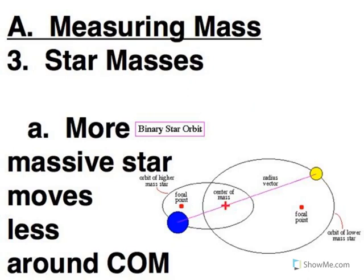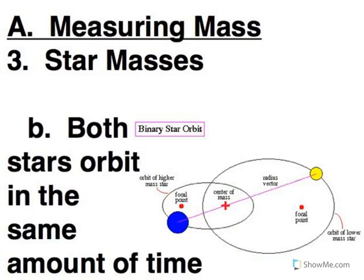So like we said, the high mass star has this small orbit. It's not going to move very far around the center of mass. Our low mass star has this huge orbit that it has to follow as it goes around the center of mass. But they both orbit in the same amount of time because they always have to be on opposite sides of the center of mass.